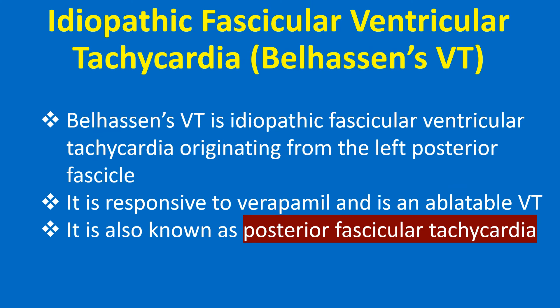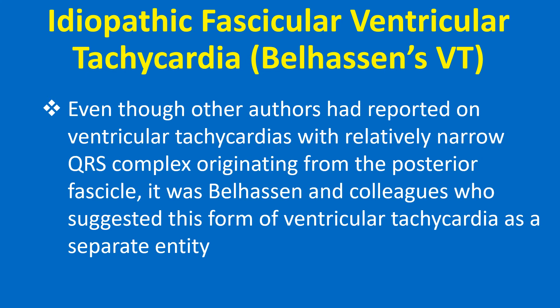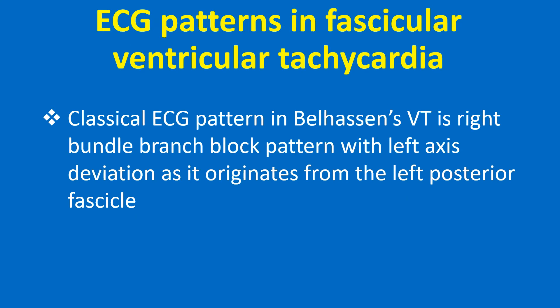Belhassen's VT is idiopathic fascicular ventricular tachycardia originating from the left posterior fascicle. It is responsive to verapamil and is an ablatable VT, also known as posterior fascicular tachycardia. Belhassen and associates described a ventricular tachycardia responding to verapamil, unlike the usual ventricular tachycardias which respond to lignocaine. It may be noted that verapamil is conventionally a drug used for treatment of supraventricular rather than ventricular tachycardia. The classical ECG pattern in Belhassen's VT is right bundle branch block pattern with left axis deviation, as it originates from the left posterior fascicle.